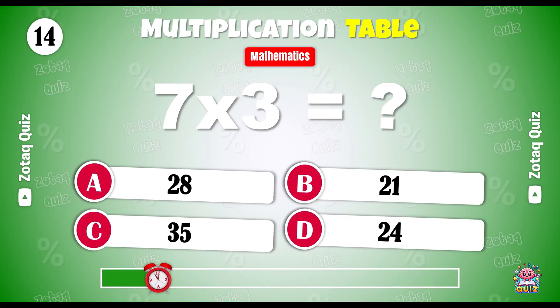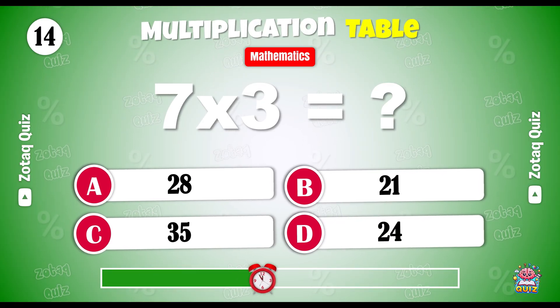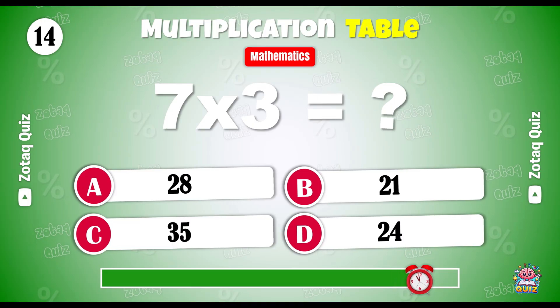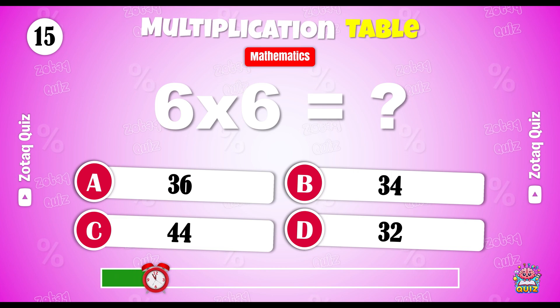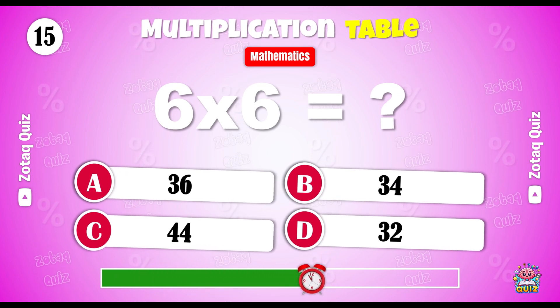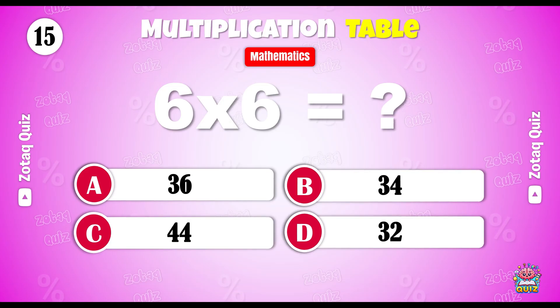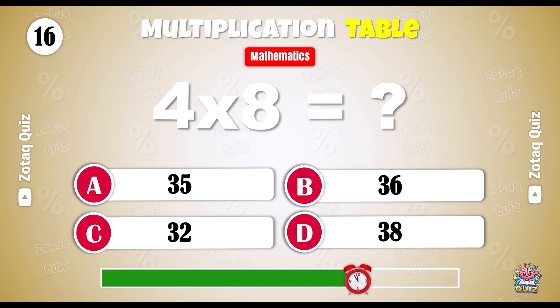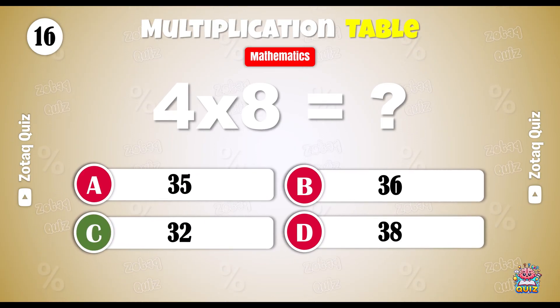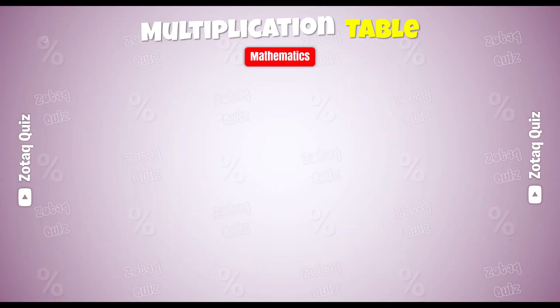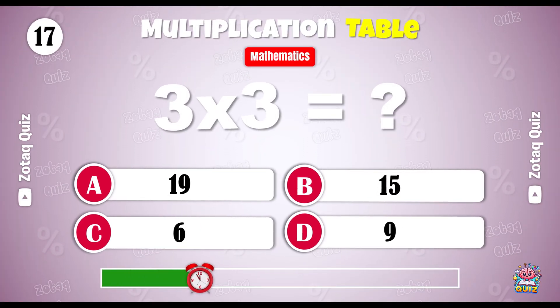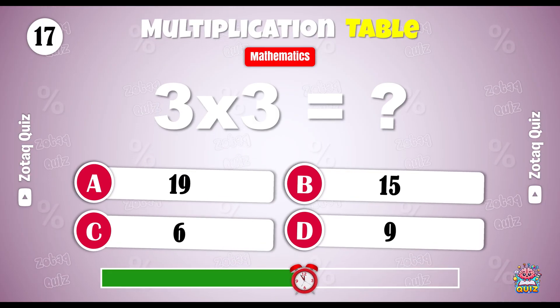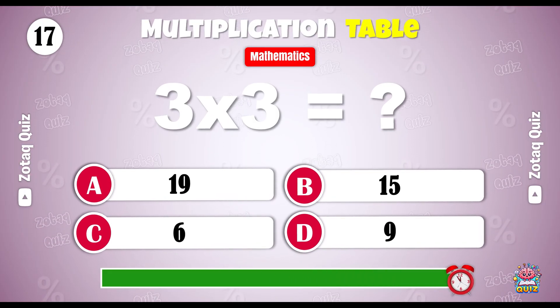What is 7 x 3? 21 is the right answer. Now 6 x 6. 36 is the right answer. It's very easy. 4 x 8. 32 is the right answer. Math genius. 3 x 3 is equal to — is equal to 9.